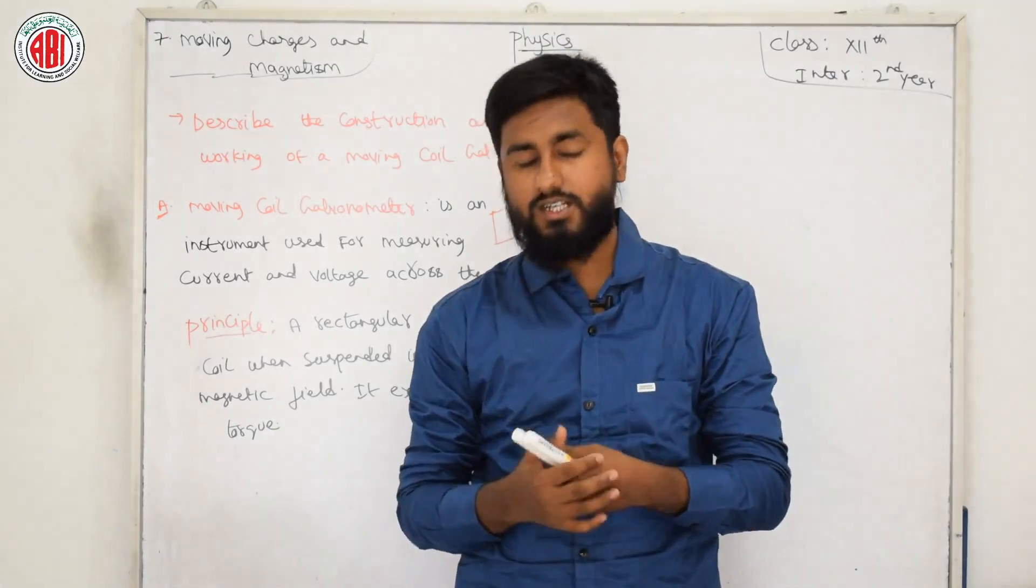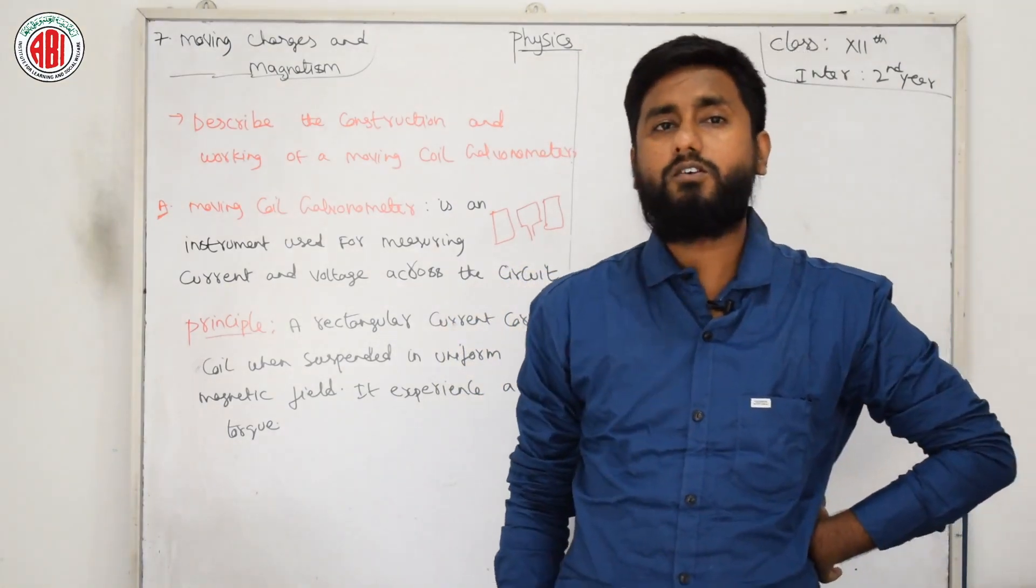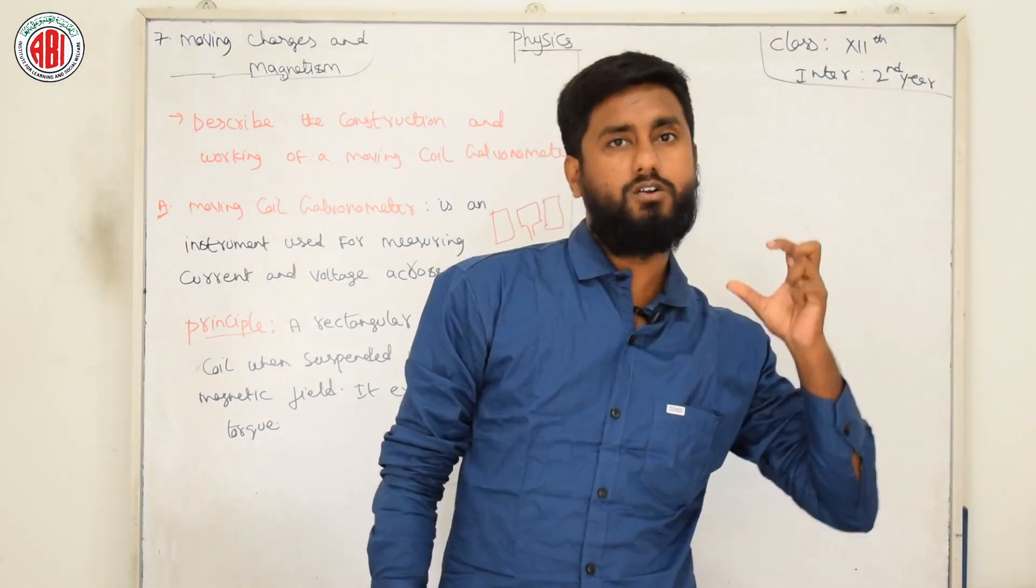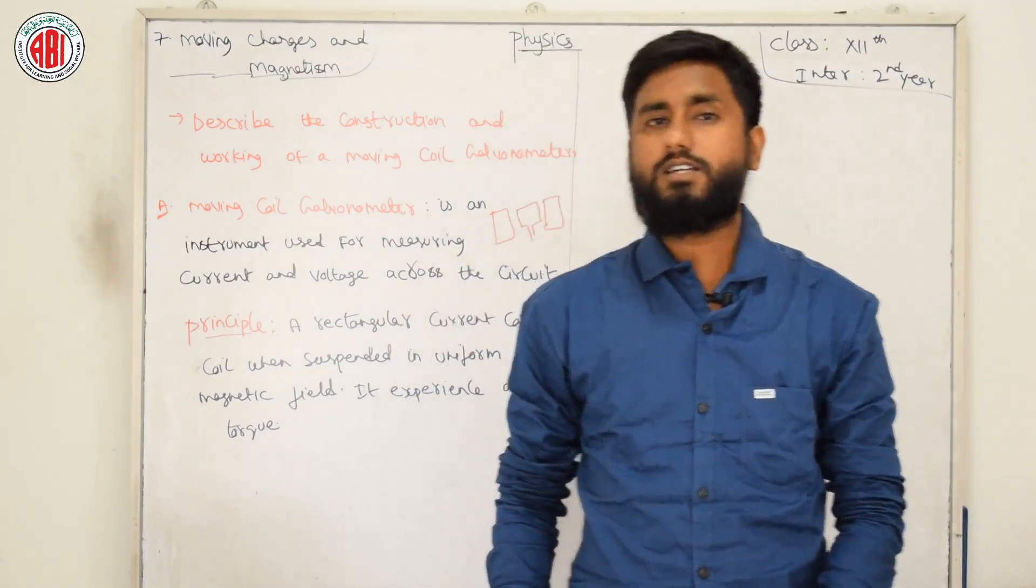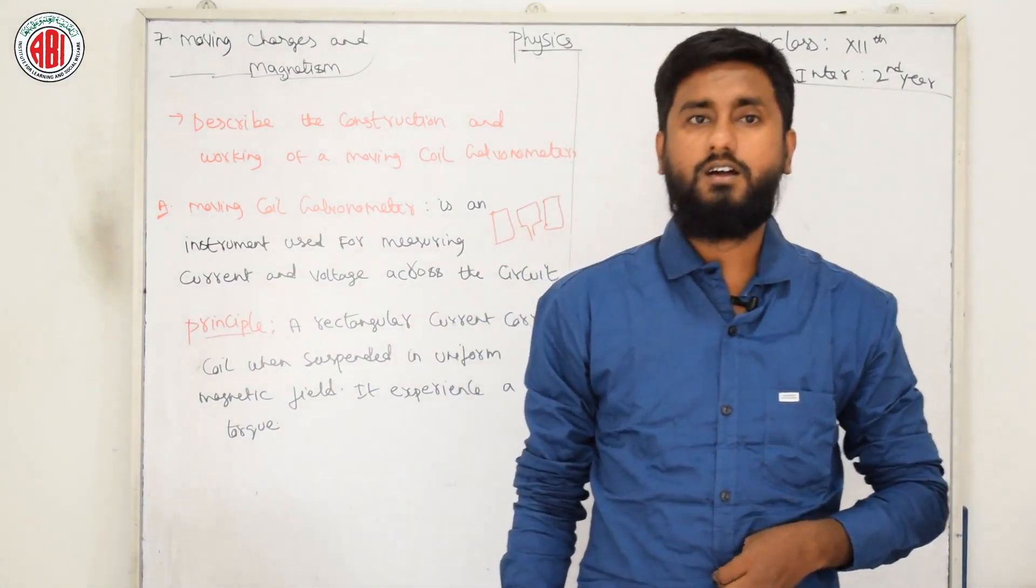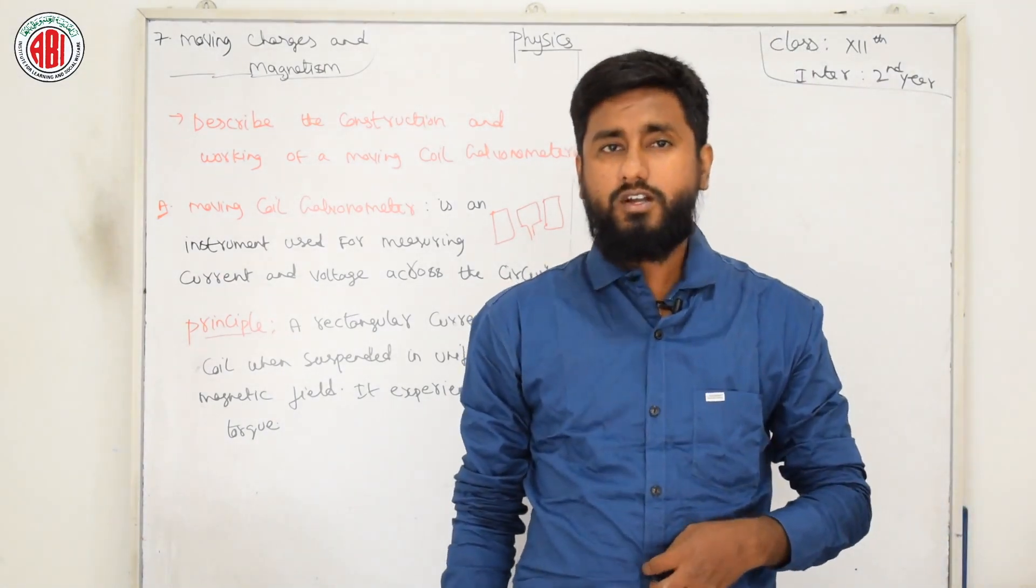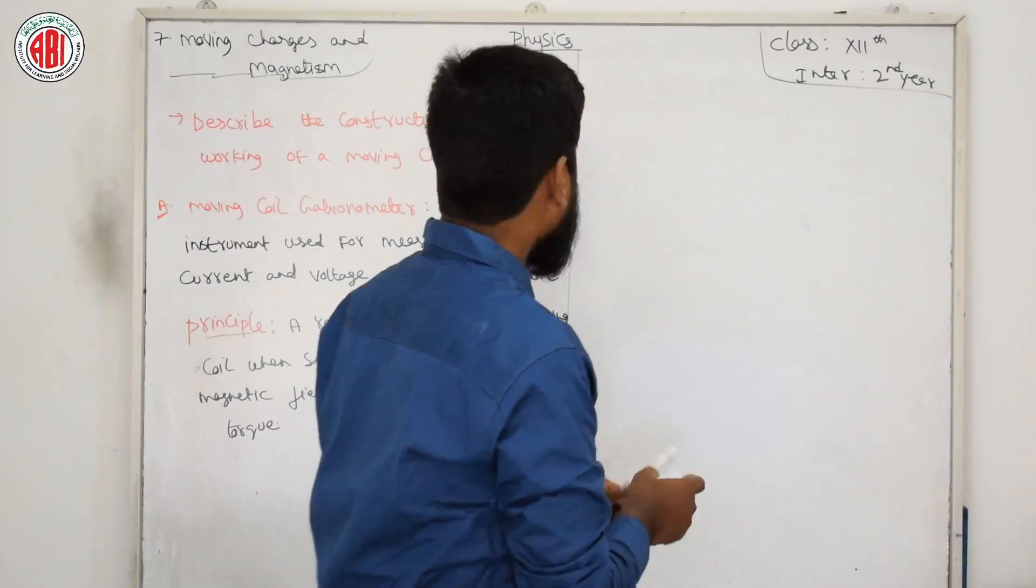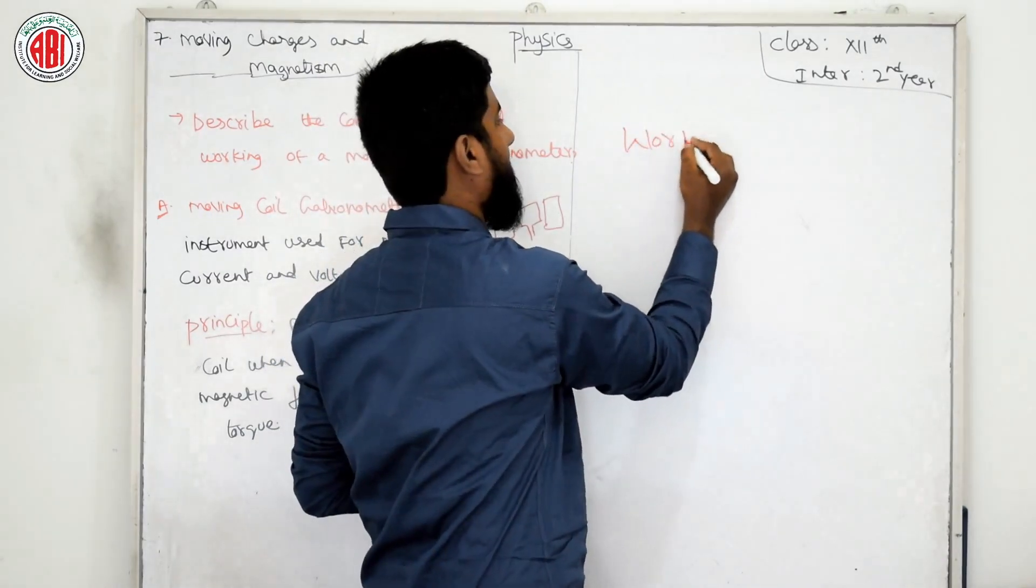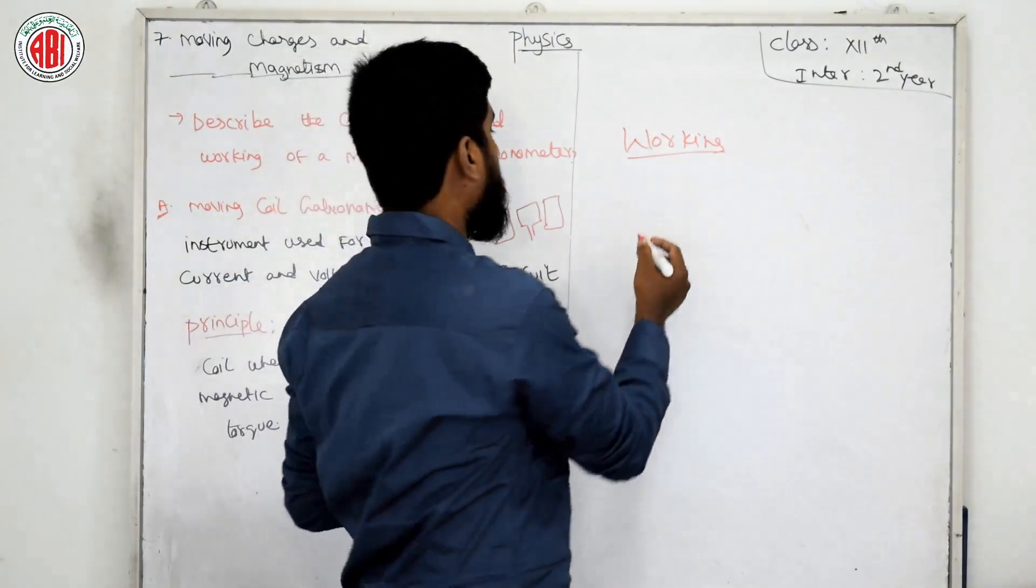I will draw a rough diagram also on board for explanation purpose. It consists of rectangular coil having N turns which is free to rotate about a fixed axis wound on a non-metallic frame. So I am just going to explain you the working. For working we need a rough diagram.